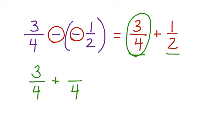Now we're going to rename 1 half in terms of fourths. 2 goes into 4 twice, times the numerator of 1 becomes 2. Now we can add these together. We have 3 fourths plus 2 fourths. Our denominators are the same. We bring that over to the solution. 3 plus 2 is equal to 5.